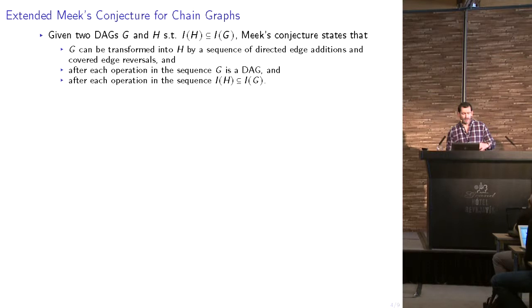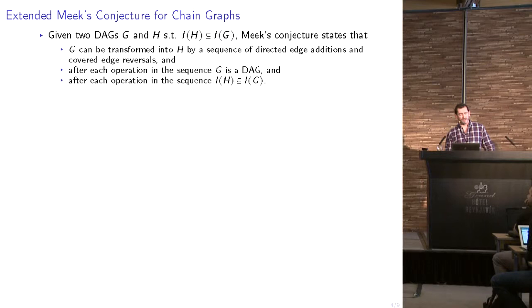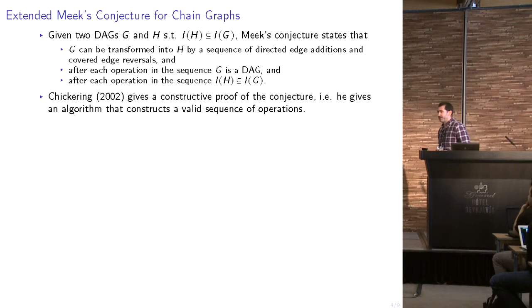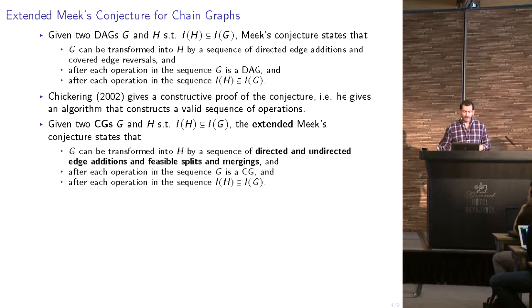The original conjecture applies to Bayesian networks and says that given two Bayesian networks G and H, such that the independence model of H is included in the independence model of G, we can transform G into H by a sequence of directed edge additions and reversals, and after each operation G remains a DAG and the inclusion condition is still satisfied. This was proven by Chickering in 2002, who also gave an explicit algorithm to perform the transformation.